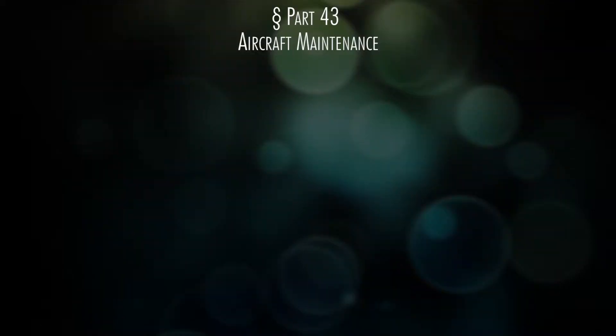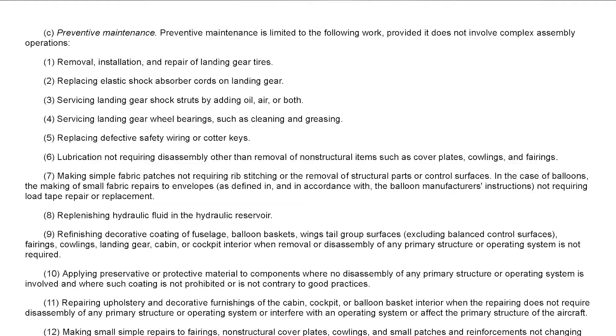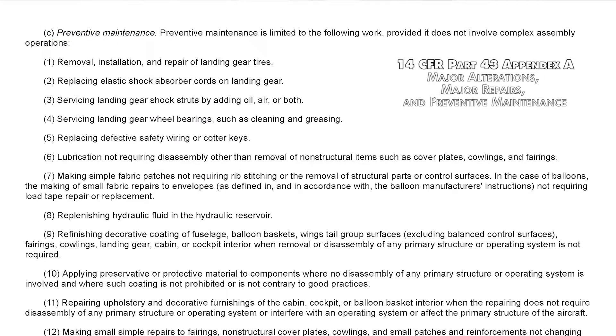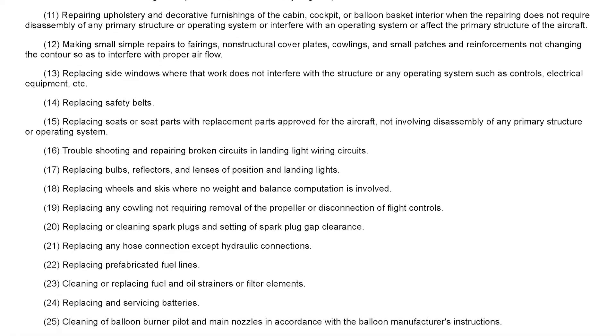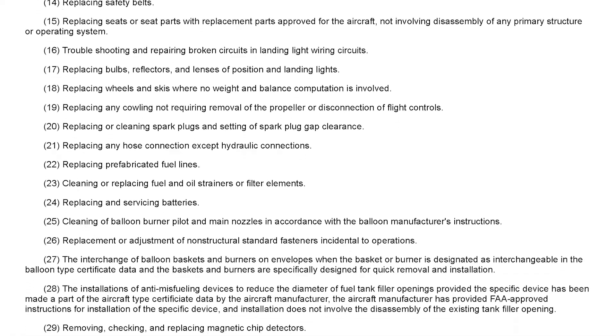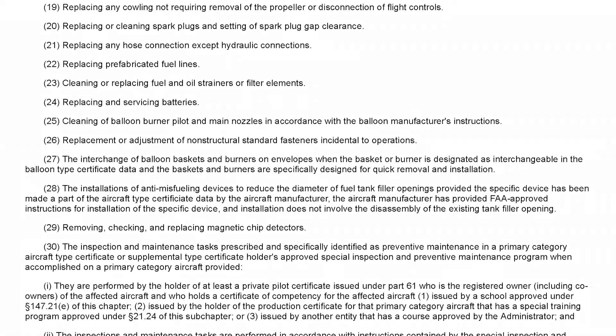Part 43 talks about aircraft maintenance — who can do it, what do they have to do. The important thing for you to know is where to find preventative maintenance, which is in Appendix A of Part 43. Preventative maintenance is a list of things that you yourself can do if you own an airplane that does not require a mechanic sign-off.